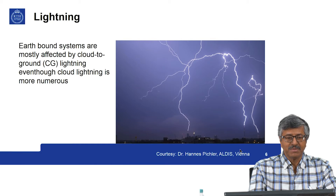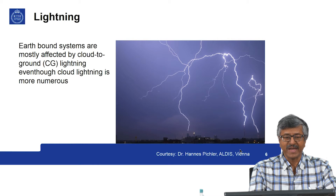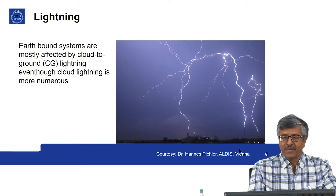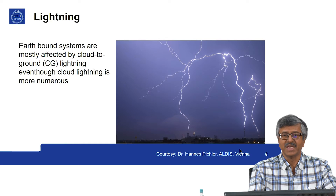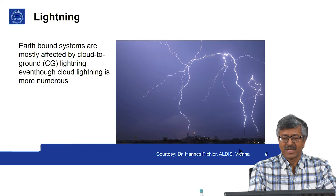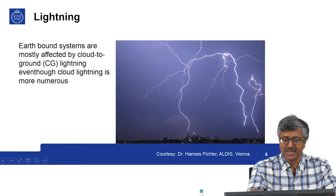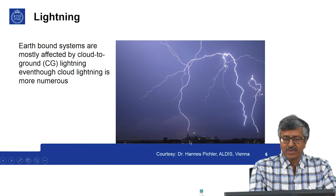Earth-bound systems are mostly affected by cloud-to-ground lightning, even though cloud lightning is more numerous. Cloud lightning is lightning within the cloud — you can see it when you look up, but there is no flash coming down to earth. Whereas in cloud-to-ground lightning, there is a flash coming down and striking objects on the ground. We will be concentrating on cloud-to-ground lightning.